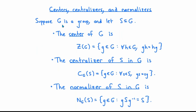If G is a group, then the center of G, which is denoted by Z of G, is the set of all elements little g in G with the property that for any H in G, gH is H times g. In other words, the center of G is the set of all elements of G which commute with every other element of G.